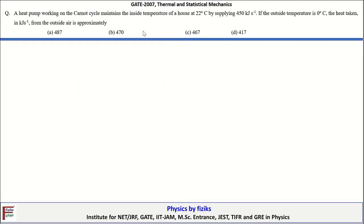Let's take a look at the next problem. This problem is related to a Carnot heat engine — not exactly a heat engine but a heat pump. A heat pump working on a Carnot cycle maintains the inside temperature of a house at 22 degrees Celsius by supplying 450 kJ per second. If the outside temperature is 0 degrees Celsius, the heat taken in kJ per second from the outside air is approximately?